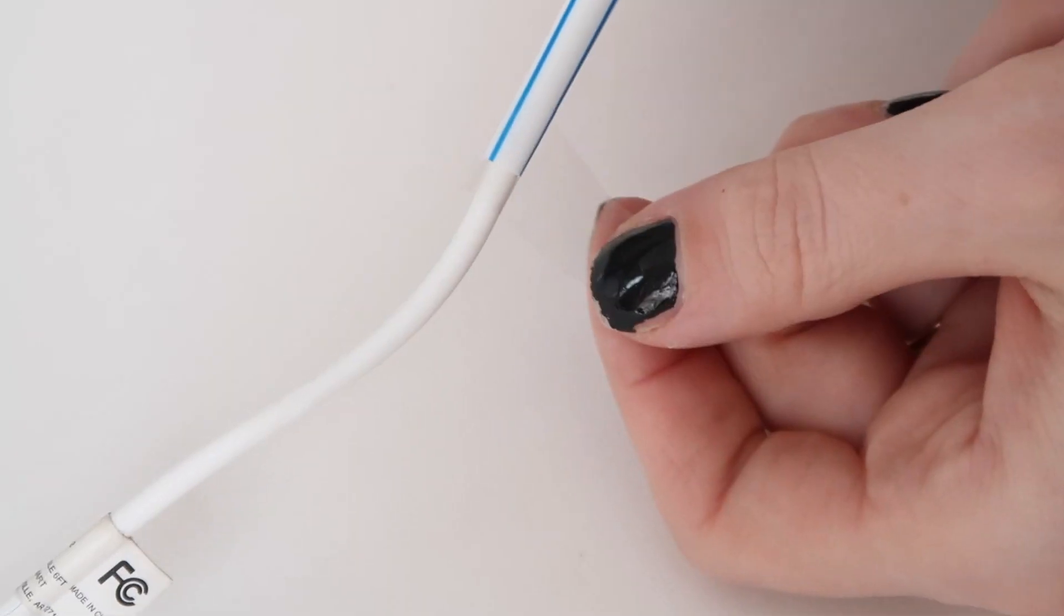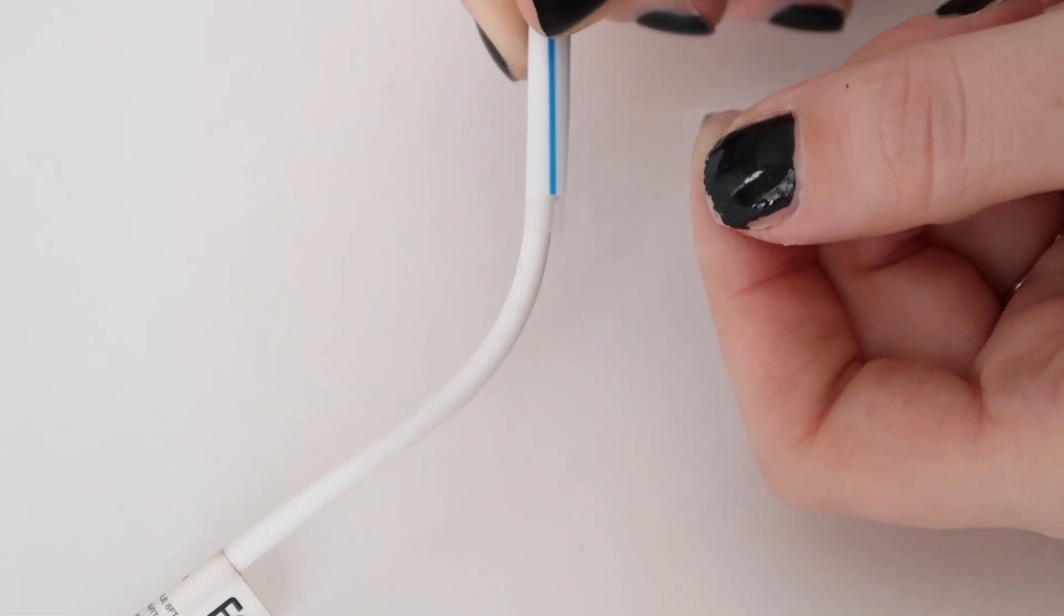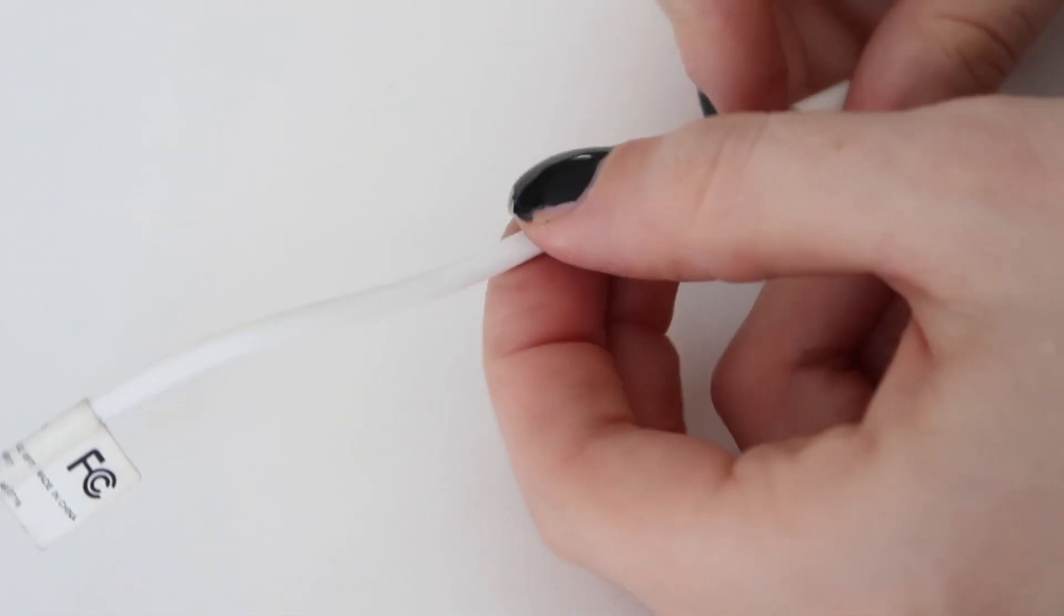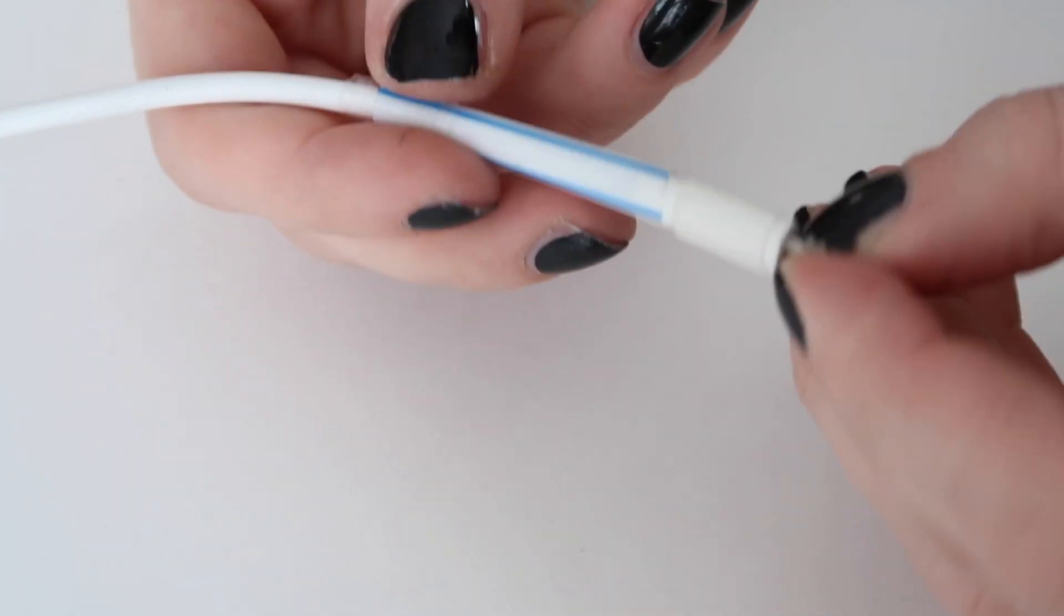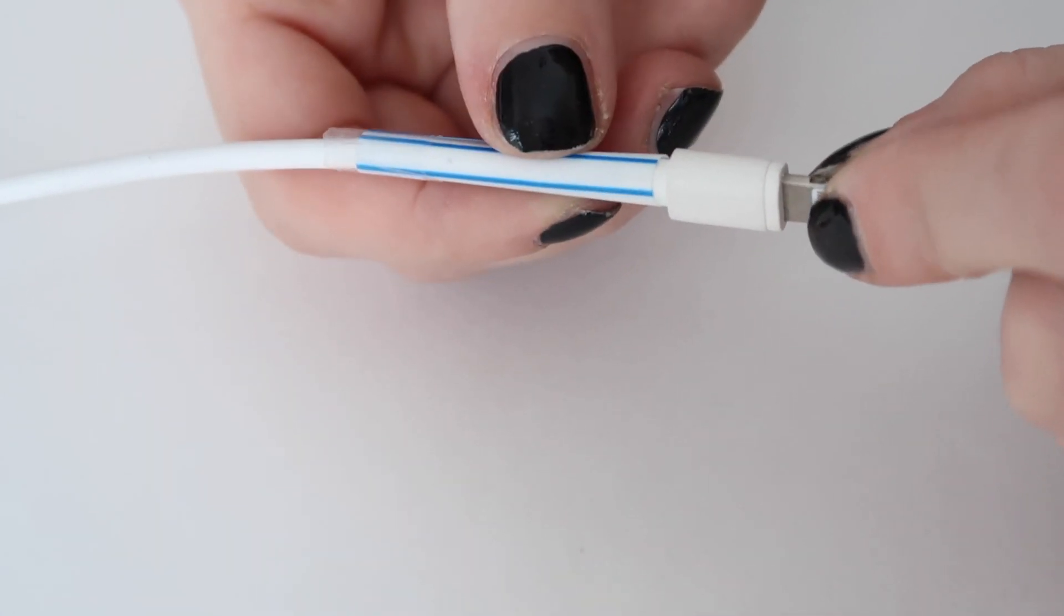Then just using a piece of tape, you can either use white electrical tape to match your charger, a piece of clear tape, or even colorful fun washi tape. Not only would this fix a broken wire, but it also helps to protect wires from their inevitable fate of breaking and fraying.